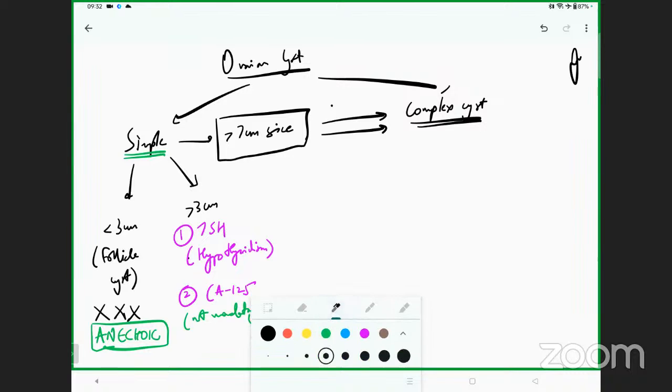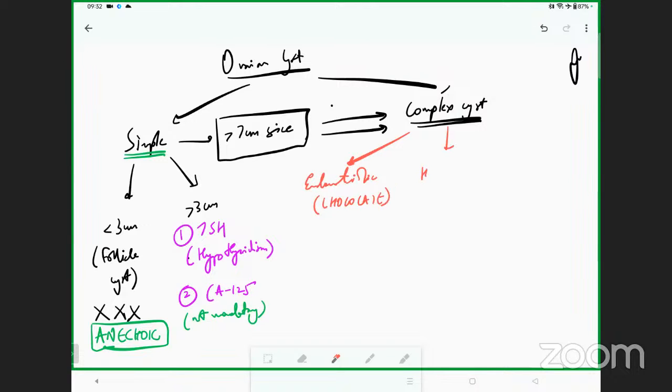As a family physician, the commonest types you will see include endometriotic cyst, also called chocolate cyst, and hemorrhagic cyst, which is very commonly seen.